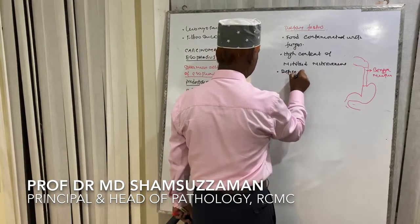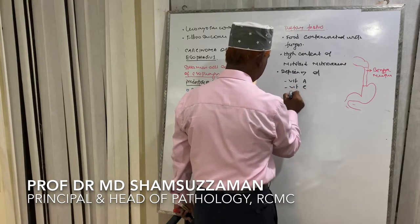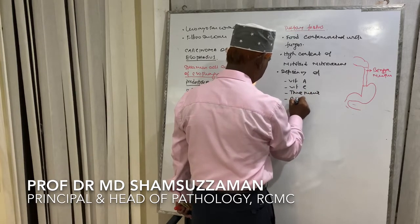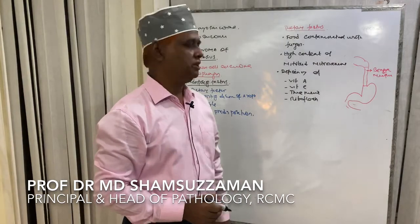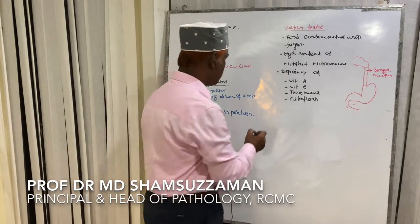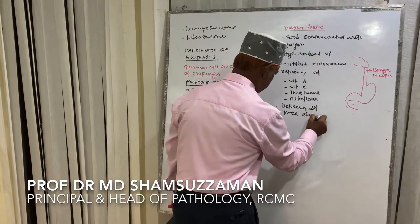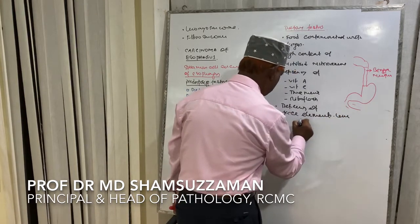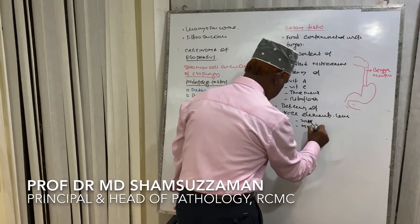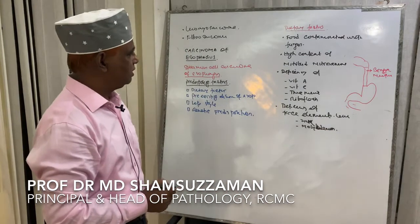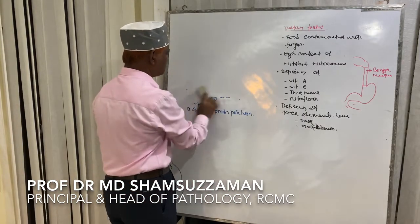Dietary deficiency of vitamin A, vitamin C, thiamine, and riboflavin are also implicated. Additionally, deficiency of trace elements like zinc and molybdenum are dietary factors associated with squamous cell carcinoma of the esophagus.